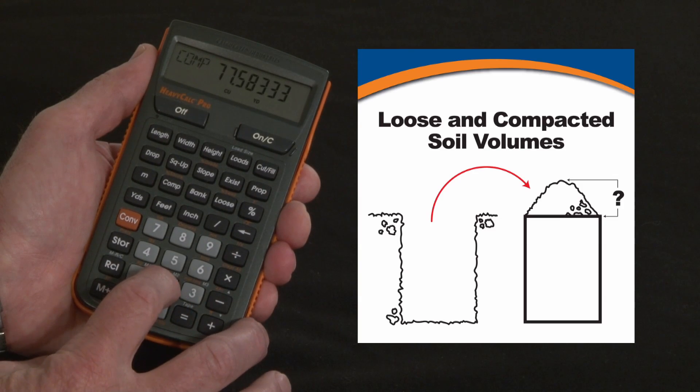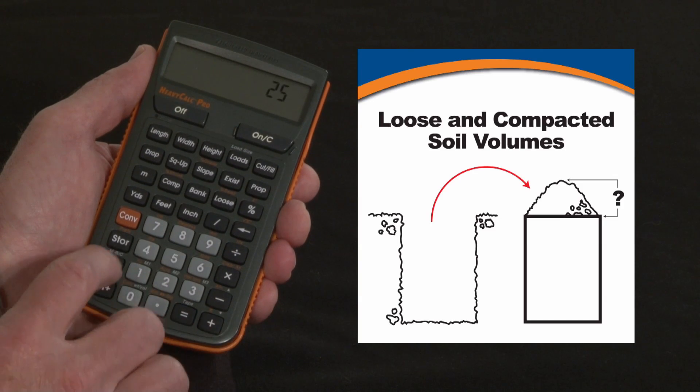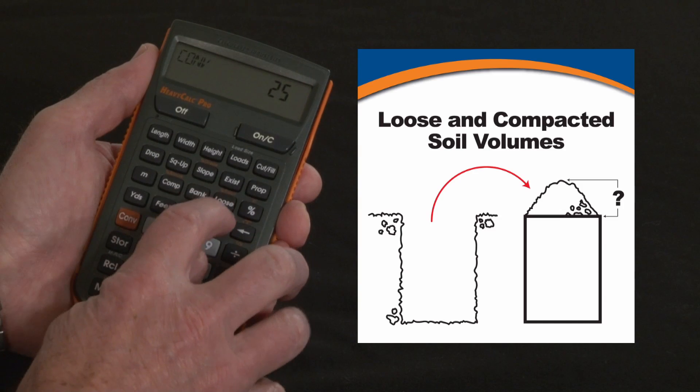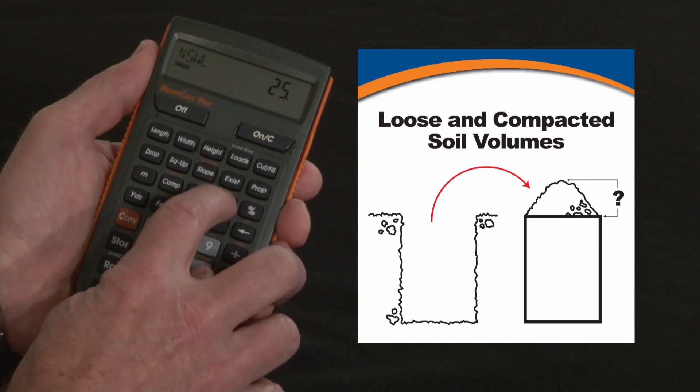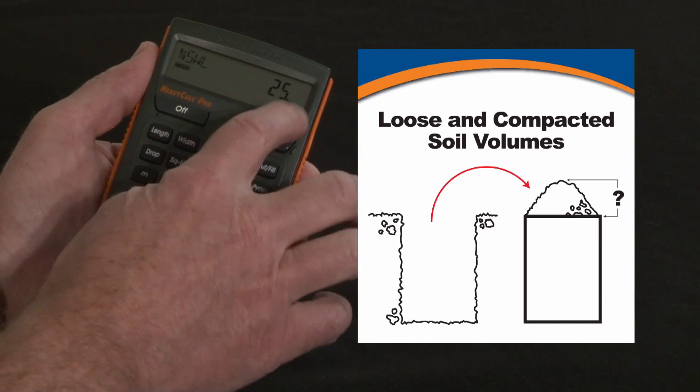Just to give you an example, let's change it to maybe 25%. Hit 25, store, hit the convert key to hit over the loose key. It says swell. So now it says percent swell as 25 is stored.